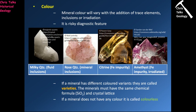Using colour as a diagnostic feature is normally not that useful. There are rare circumstances where colour can be efficient — for example, the mineral kyanite is blue, and there aren't many blue minerals, so when you see a blue mineral your choices are limited. But for most minerals, colour is not useful. All the quartz varieties — milky quartz, rose quartz, citrine, amethyst — are all SiO₂. We call these varieties, each with a slightly different composition resulting in a different colour. A mineral with no colour is called colourless.